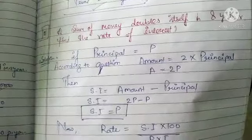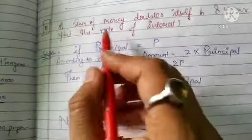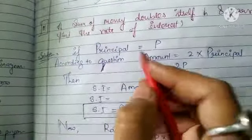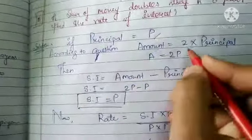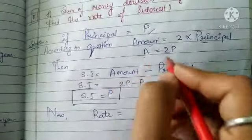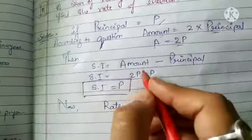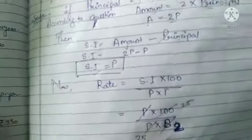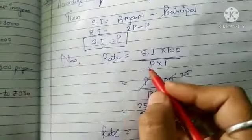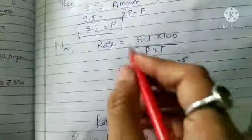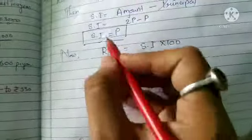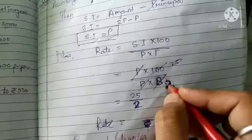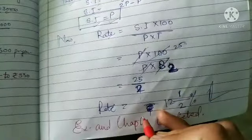Last question of the exercise: A sum of money doubles itself in 8 years — find the rate of interest. The amount doubles the principal, so if principal is P, then Amount = 2P. First find SI = Amount − Principal = 2P − P = P. Then Rate = SI × 100 / (P × T) = P × 100 / (P × 8). The P cancels, giving Rate = 100/8 = 12.5% per annum.